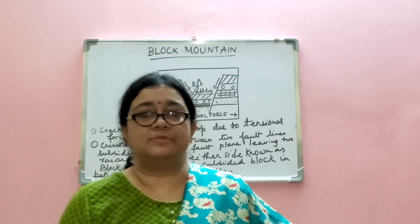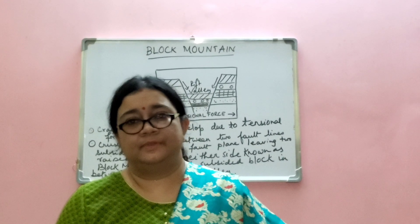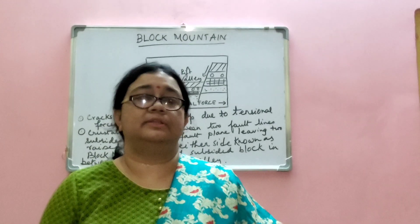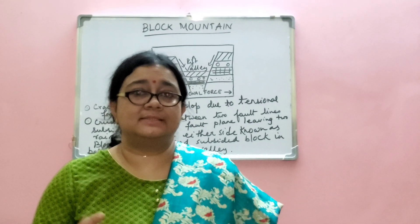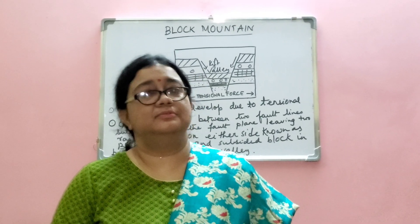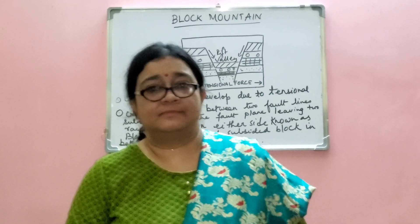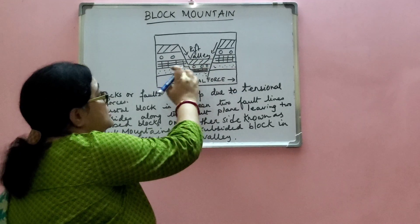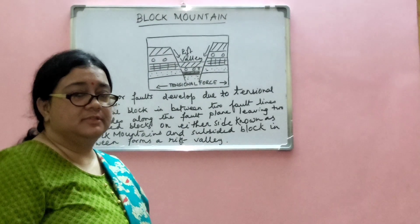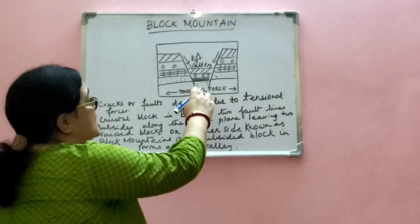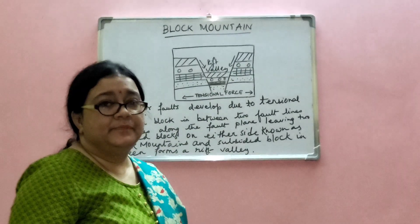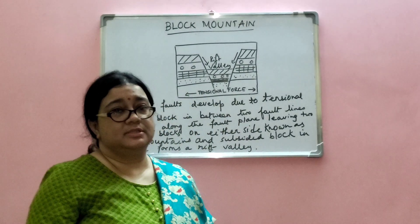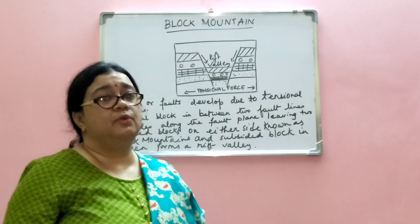The next segment of mountains is block mountains. Movement of the earth's crust sometimes causes cracks or faults on the earth's surface, and the crust gets broken into different crustal blocks. In this diagram you can see that two raised blocks form the block mountain, and the subsided part forms the rift valley. In the formation of block mountains, tensional forces are very important.